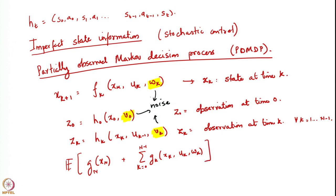As before, we need to find a policy — a sequence of strategies — to minimize this stochastic cost. We cannot talk of which action to choose in each state; we need to specify a function that prescribes the action. But here is where the question becomes more interesting: we do not know the state at any time. So the question we need to ask is: what is it that we actually know at that time? What will be our information on the basis of which we are going to take these actions? The actions u_k are to be chosen based on a policy, but what is that policy's input?